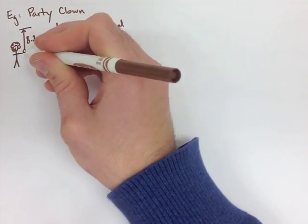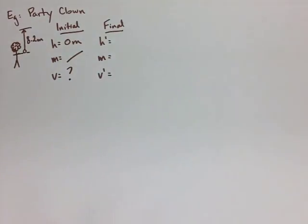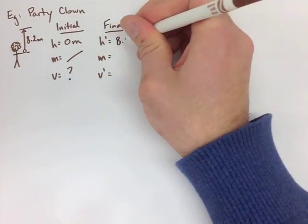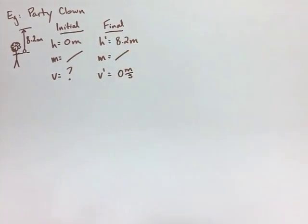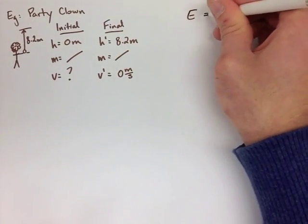So here we start with a height of zero. We don't have a mass because it doesn't matter. It's the same mass the whole time. We get a final height of 8.2, and the final height at the top, we're going to have zero meters per second.